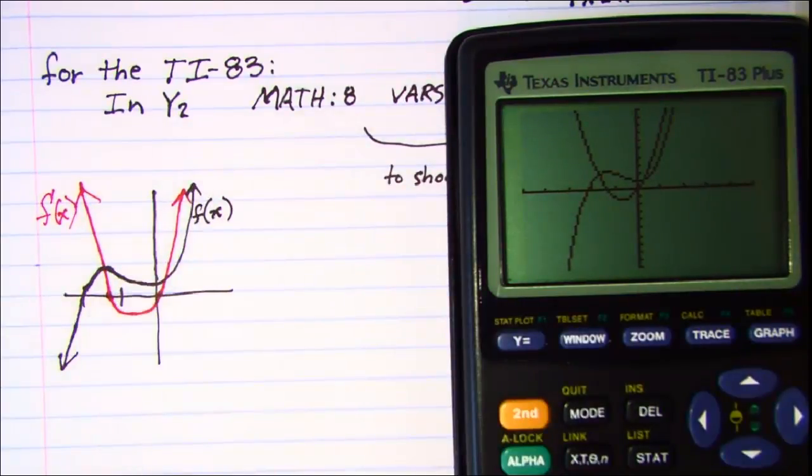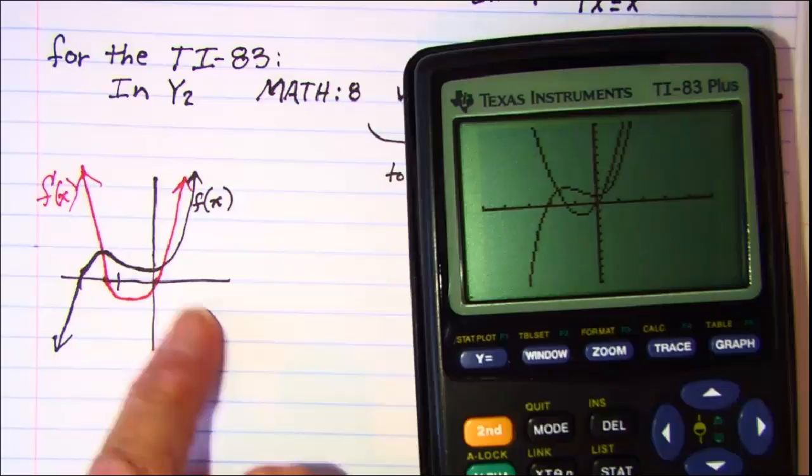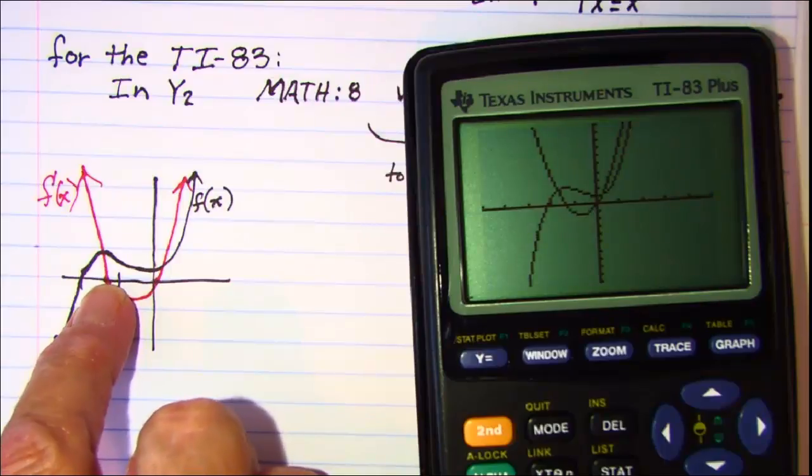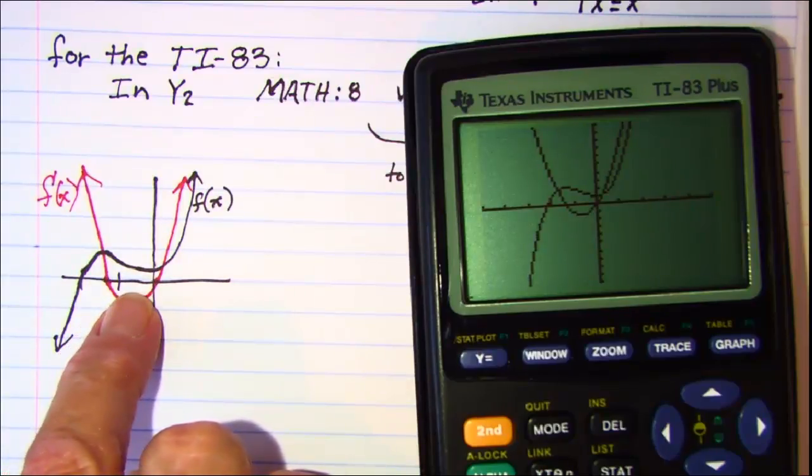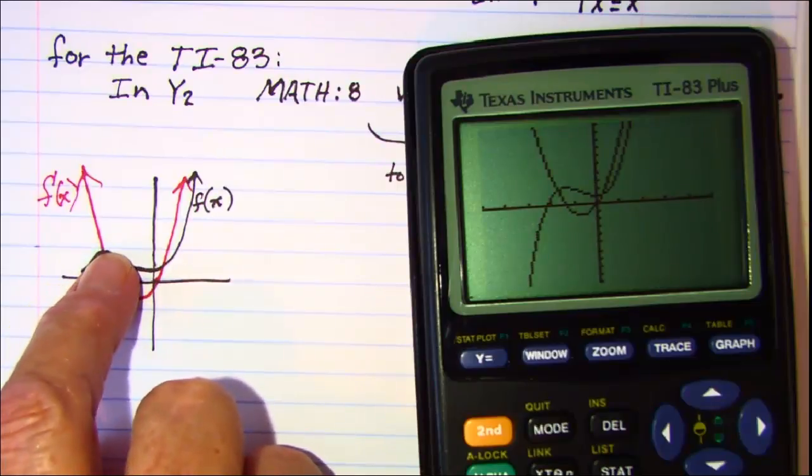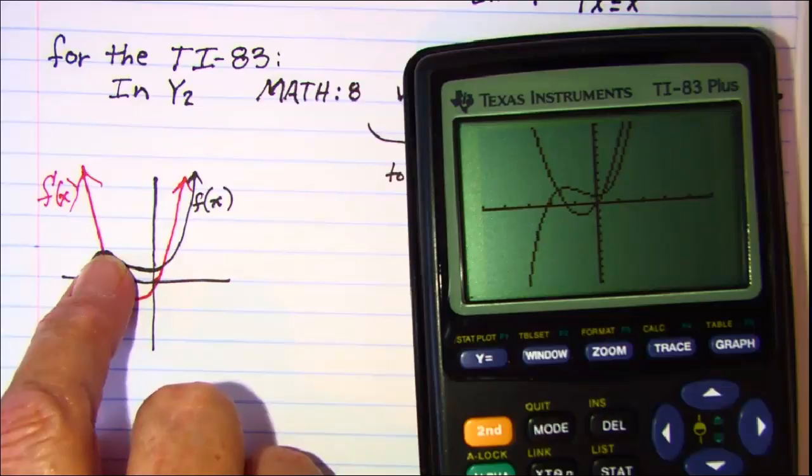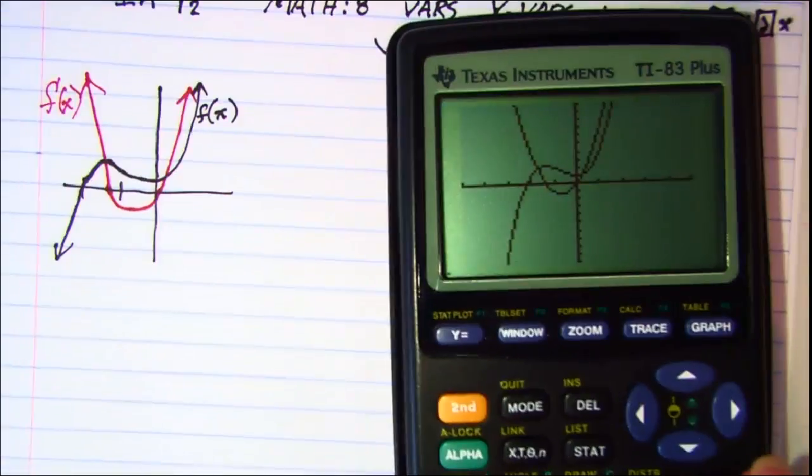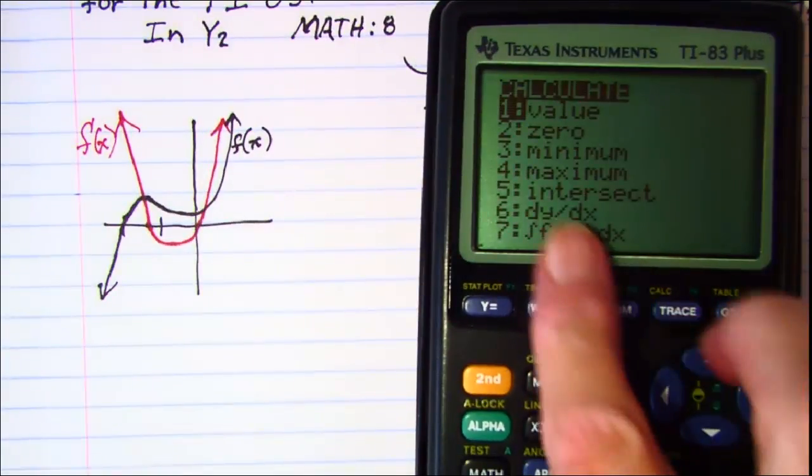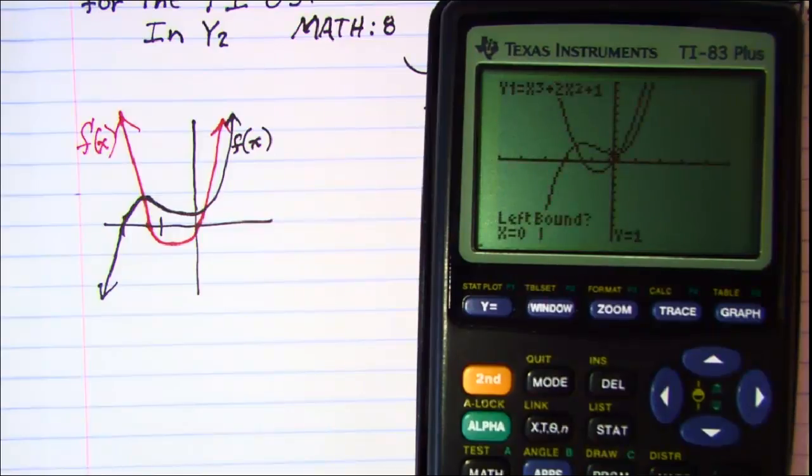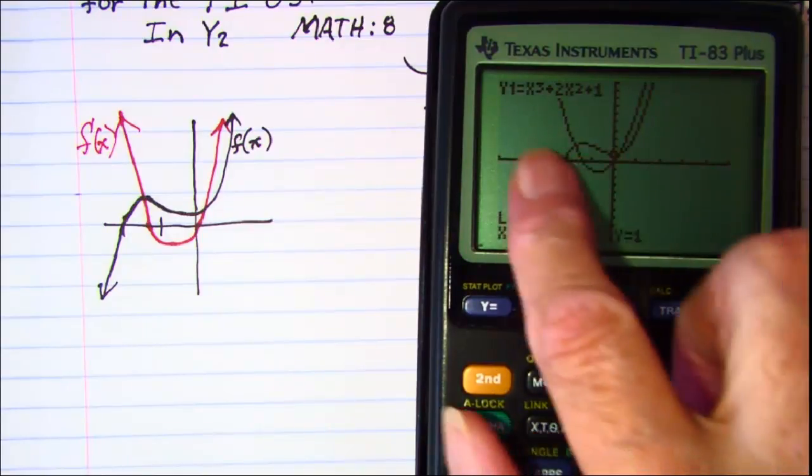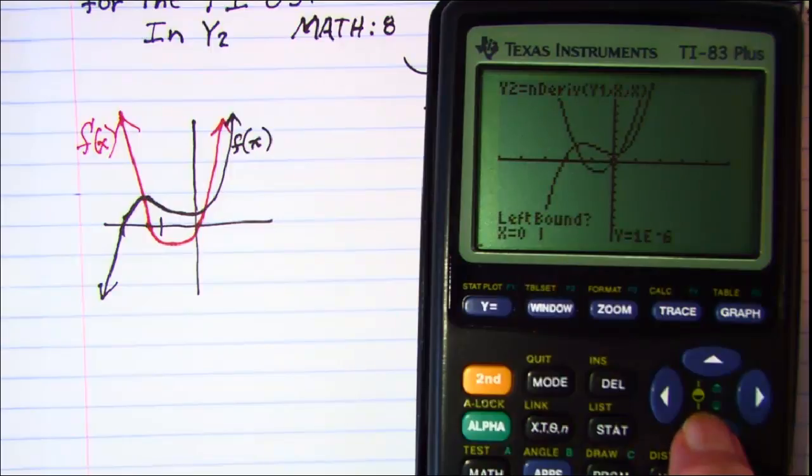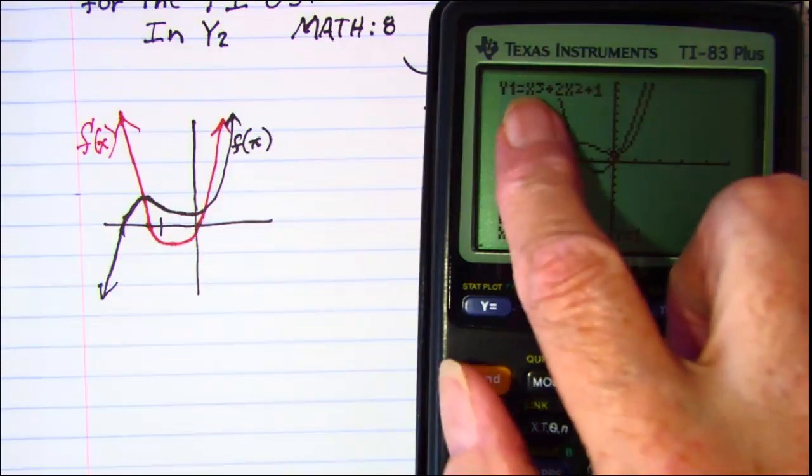And now before we put the calculator away, we really need, this one's pretty obvious that this point is the origin, but we need to find out what this point is where the derivative crosses the axis. I'm going to find that though on the function, because the function reaches its maximum point at that x value as well. So we can do that with 2nd calc, and then choose maximum. So choice 4. And then I want my, up here it shows the function that I'm working with. So either up or down will change that. So I'm working with my third degree function.